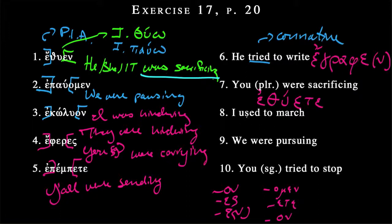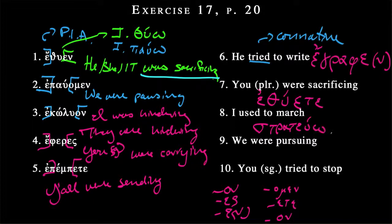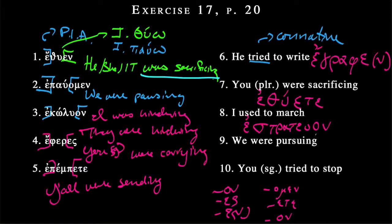'I used to march' — another aspect of the imperfect. The verb for marching is STRATEUO, which we learned last chapter: 'I am marching.' But that's not what we want. So let's lose the accent, add the past indicative augment with smooth breathing, and put the first person singular ending. The result is ESTRATEUO — that final syllable is a diphthong so the accent can hop back: ESTRATEUO. 'I used to march.'